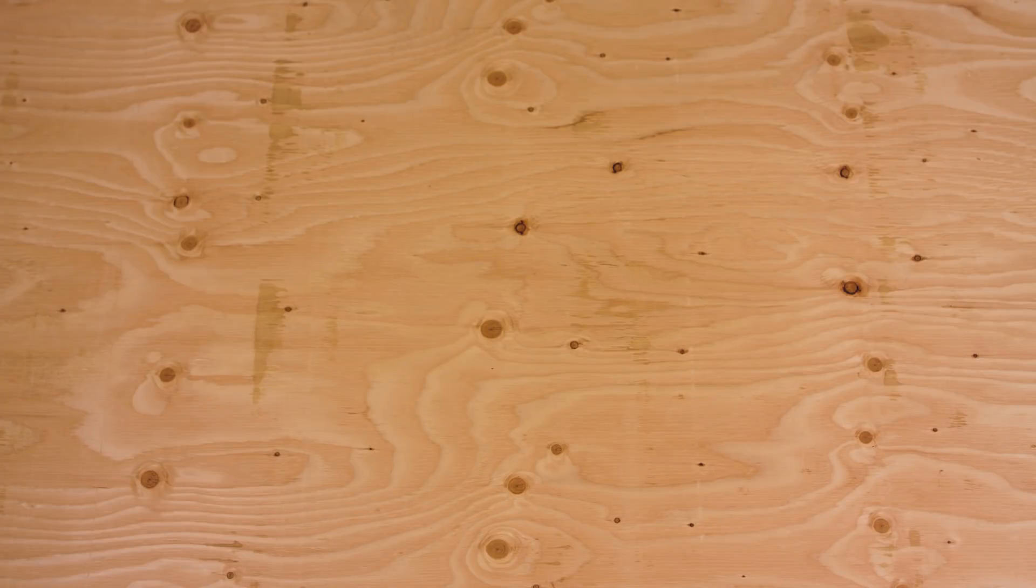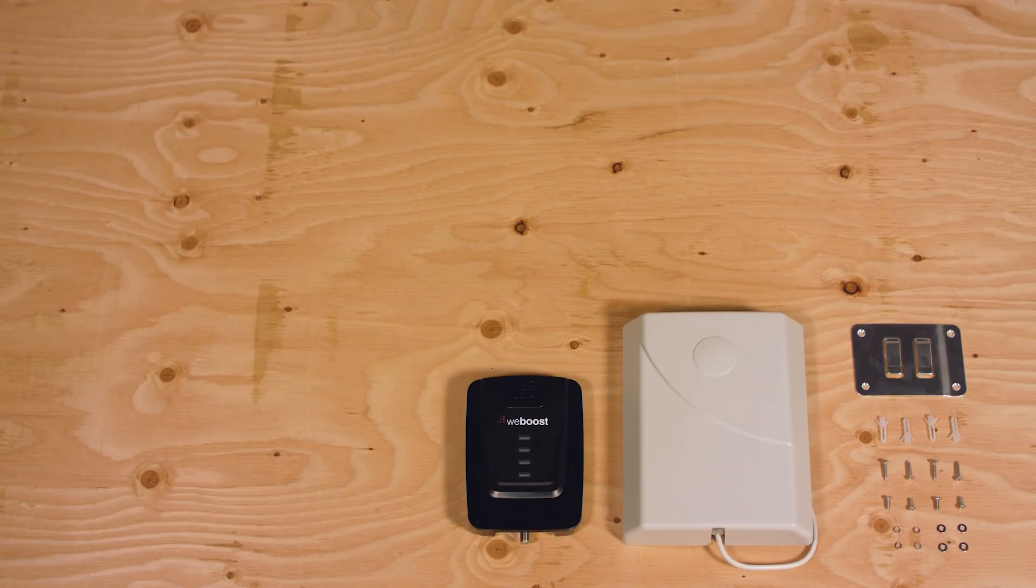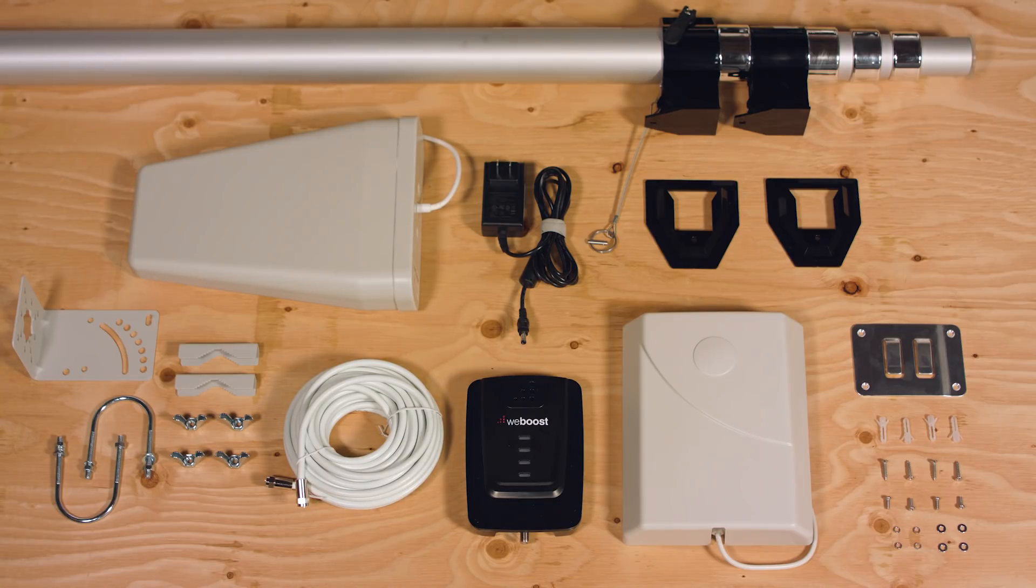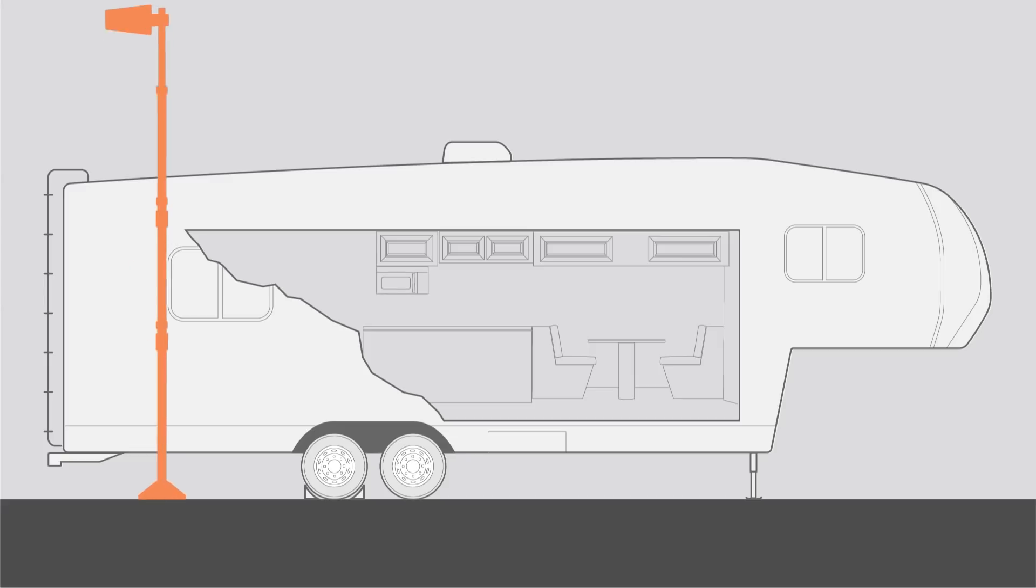The Connect RV65 comes in a big package. It contains the booster, inside antenna, outside antenna, coax cables, and the AC power supply. It also contains a 25-foot telescoping mast, everything you need to install the entire system yourself.